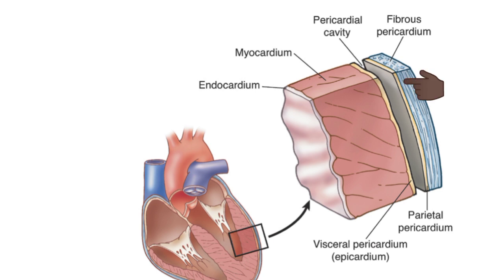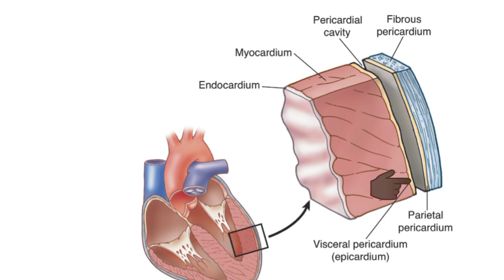The pericardium is the outer covering of the heart. It is made up of two layers: the outer parietal pericardium and the inner visceral pericardium. The space between the two layers is called the pericardial cavity or pericardial space, and it contains a thin film of fluid.